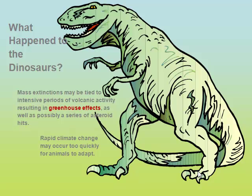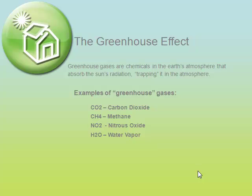That may have been what happened to the dinosaurs. Many chemical compounds found in the Earth's atmosphere act as greenhouse gases. When sunlight strikes the Earth's surface, some of it is reflected back towards space as infrared radiation, or heat. Greenhouse gases absorb this infrared radiation and trap the heat in the atmosphere. This is known as the greenhouse effect.